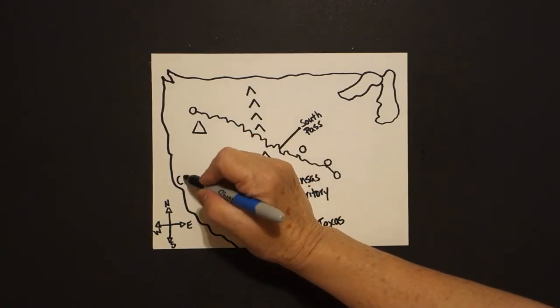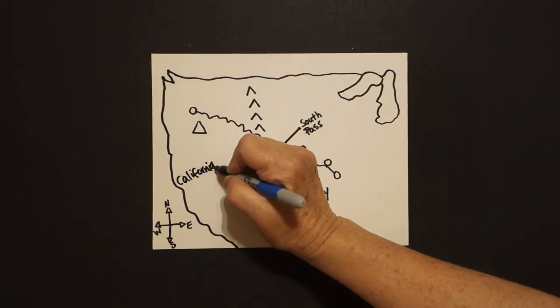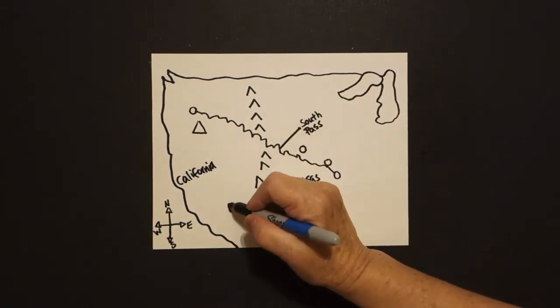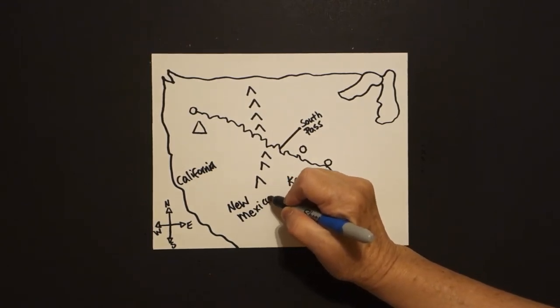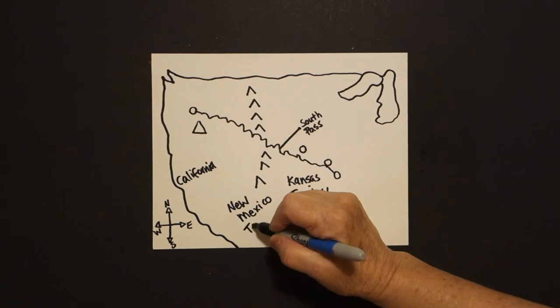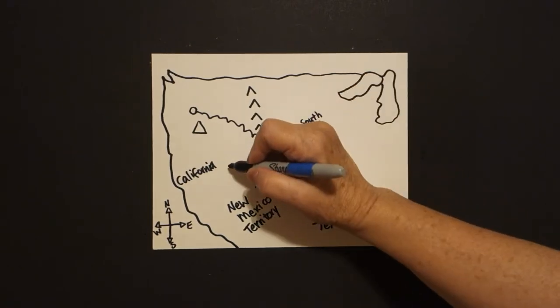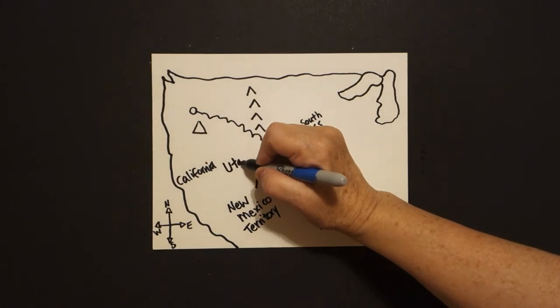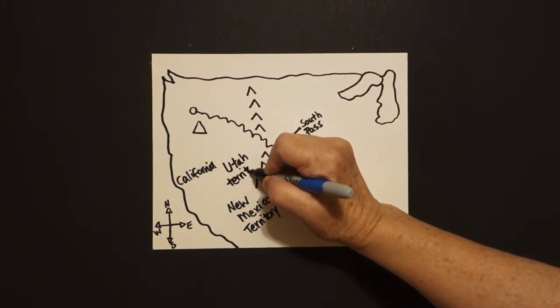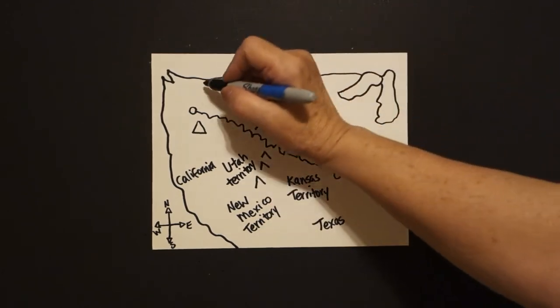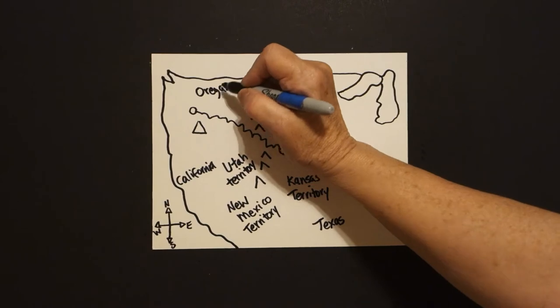Over here is California. New Mexico Territory is over here. Territory, they weren't states yet. This, over here, is the Utah Territory. And up here is the Oregon Territory.